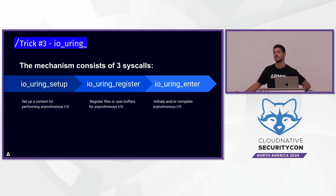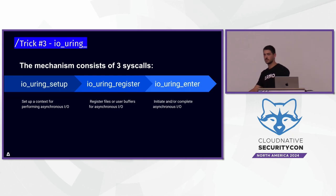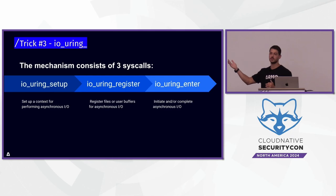Question about return-oriented programming (ROP): could using snippets of code from different loaded libraries, jumping from snippet to snippet, evade detection? If you perform a stack trace from eBPF to get the call stack of the system call and use ROP, maybe you can disrupt that stack trace — but I don't have a definitive answer for that right now.